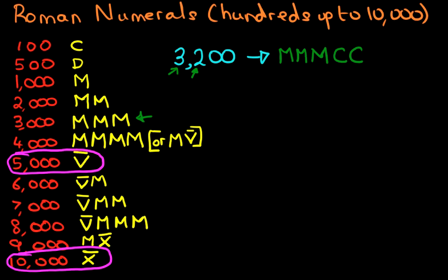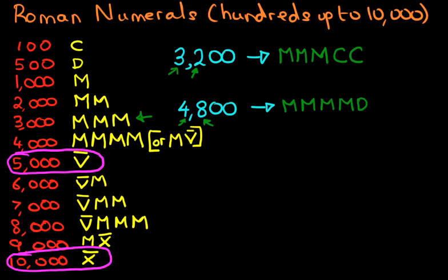Let's have a look at one more. Suppose we've got the number four thousand eight hundred — how would we write that? We start with four thousand, so we write M, M, M, M. Then we write eight hundred: D for five hundred, then C, C, C for three more hundreds — giving six hundred, seven hundred, eight hundred. So four thousand eight hundred is M, M, M, M, D, C, C, C.